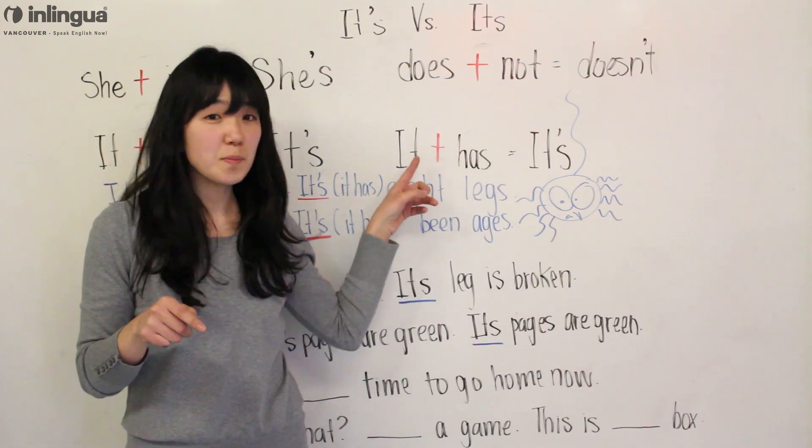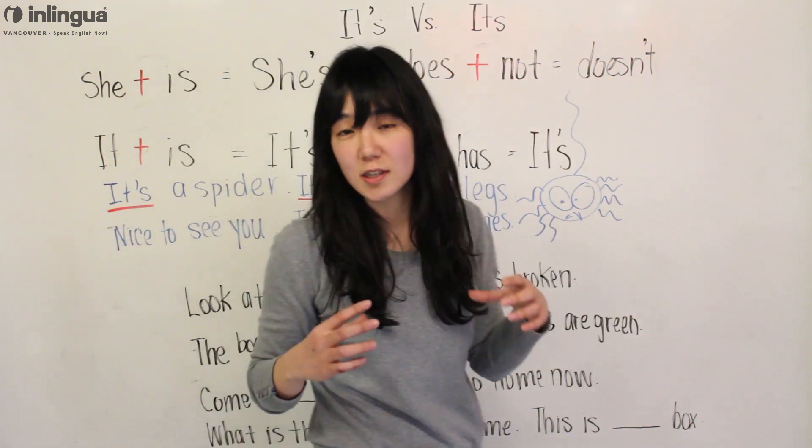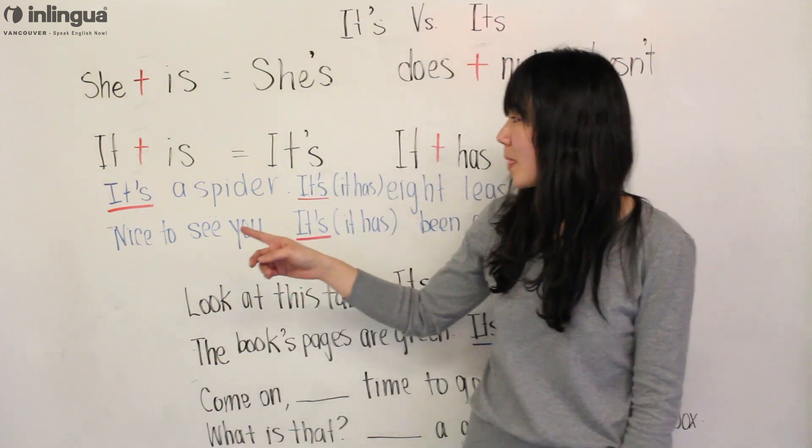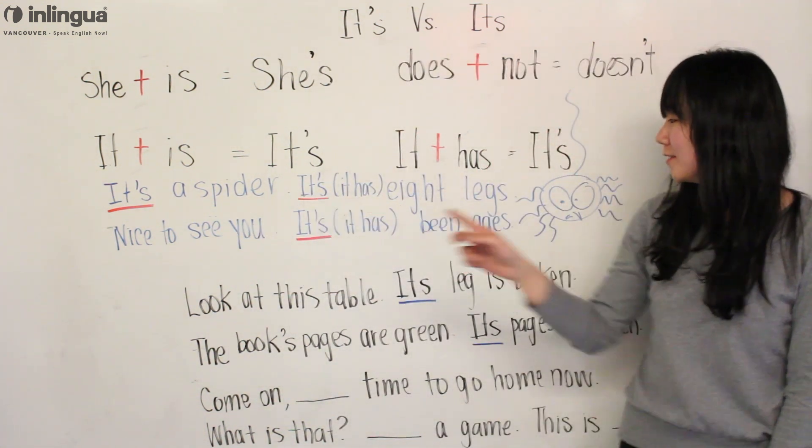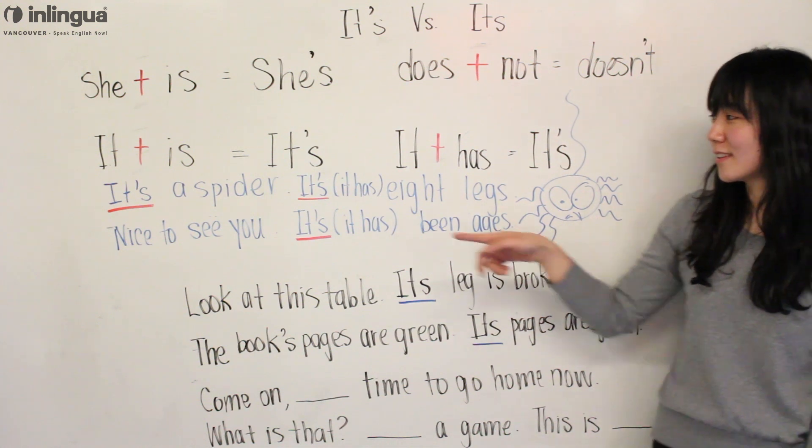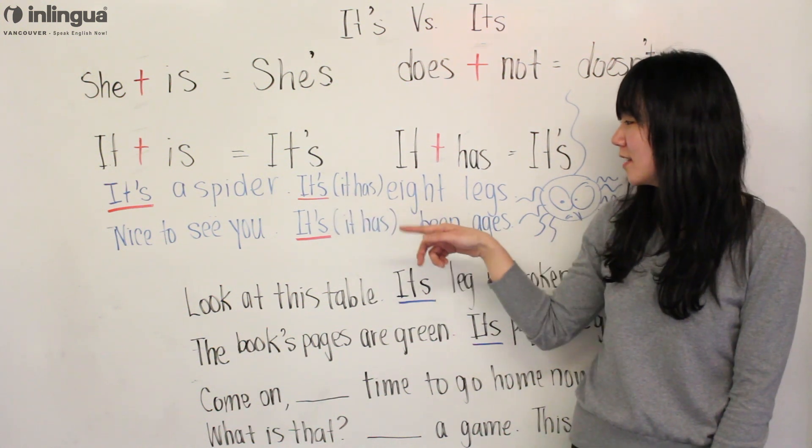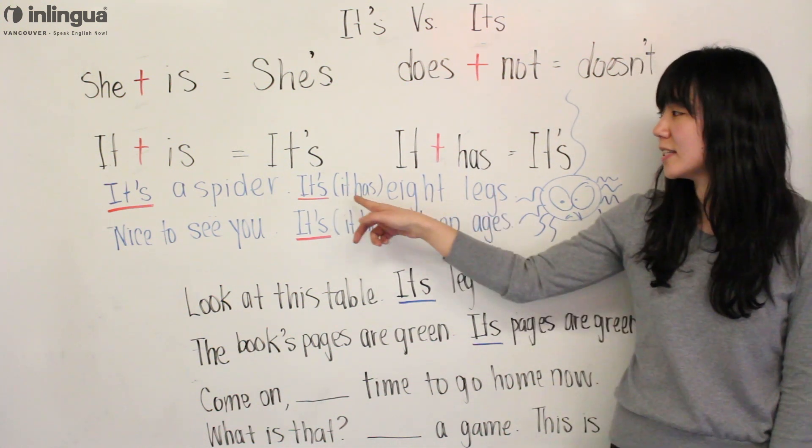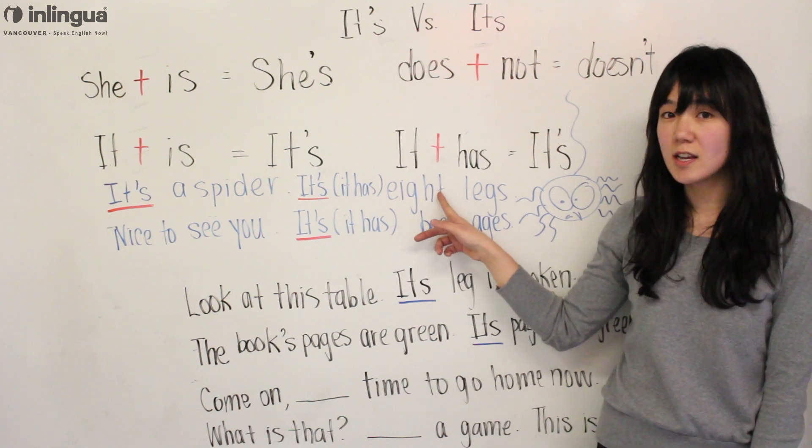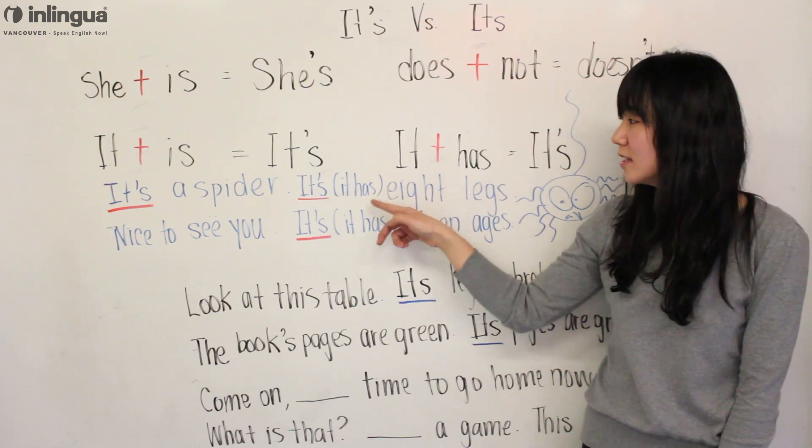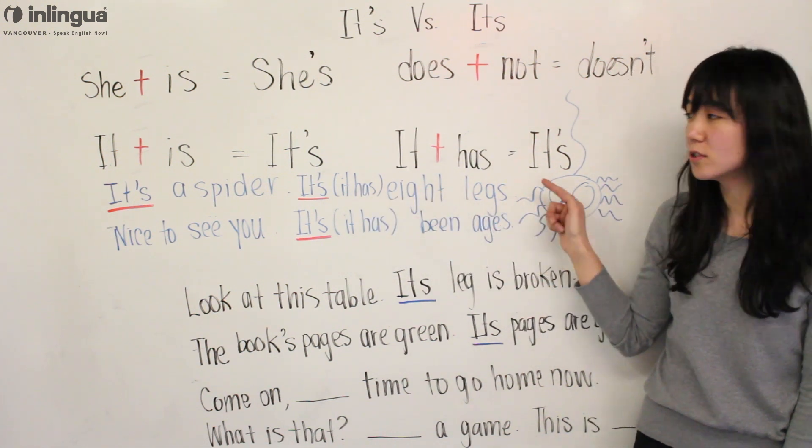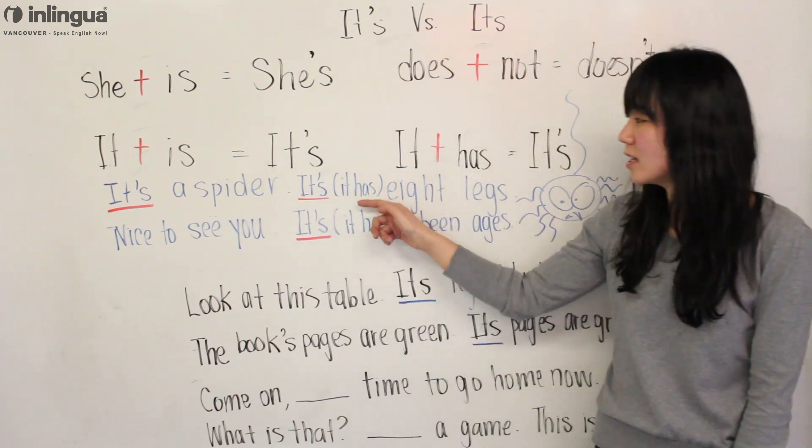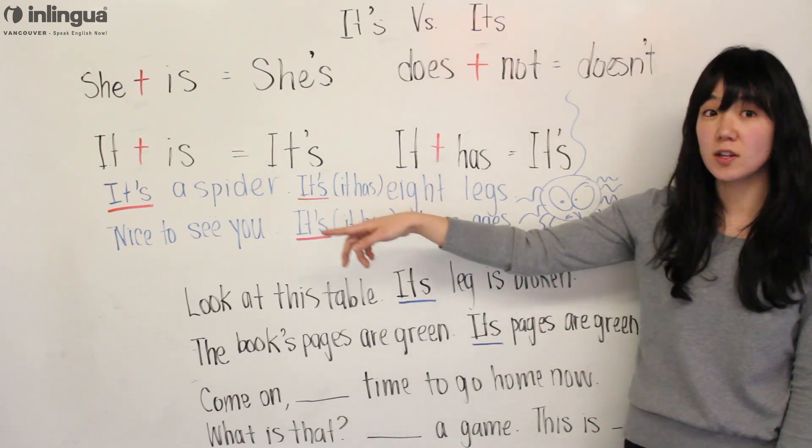They're the same but if you look at the context, you will see the difference. So I have an example: 'It's a spider. It's 8 legs.' So IT HAS 8 legs, not IT IS 8 legs. From the context you can see here, it is IT HAS, not IT IS.